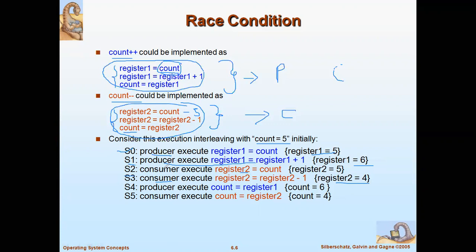Since these two processes are executing concurrently, the count variable is equated to six in the producer process and four in the consumer process — giving two different values to the variable count. This happened because the two processes were executing concurrently, resulting in inconsistency in count. The solution is to allow only one process to execute in the critical section at one point in time. This particular case of inconsistency in shared resources is called race condition.